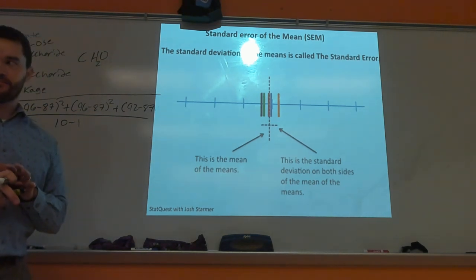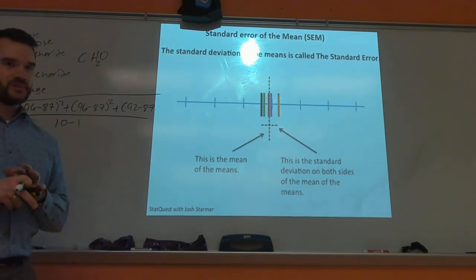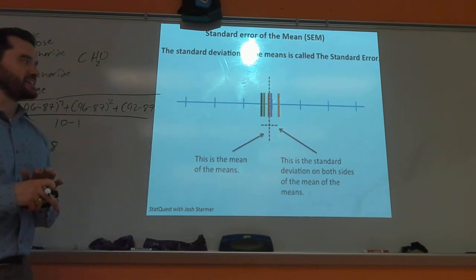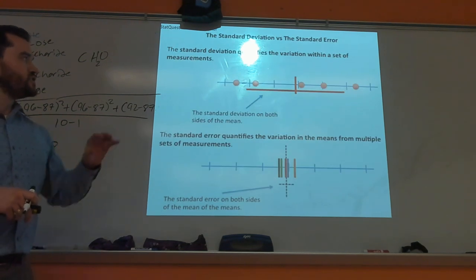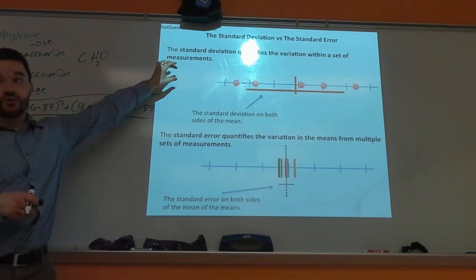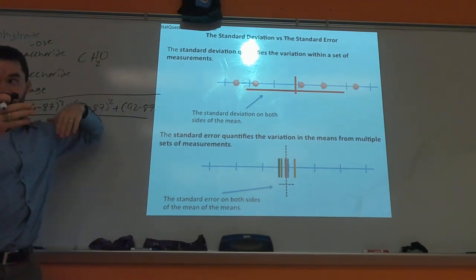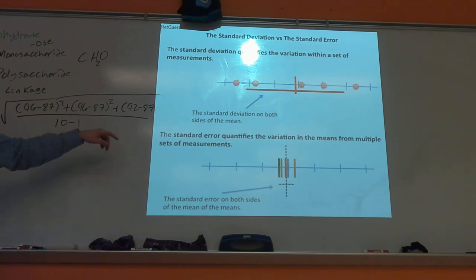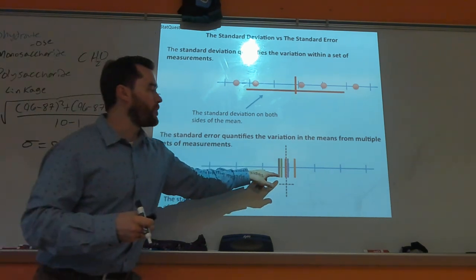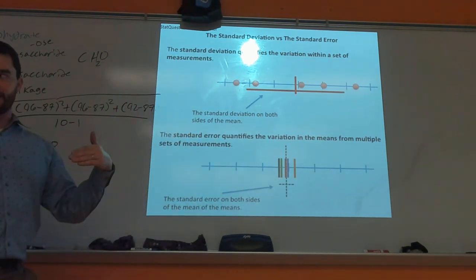'Mean of the means' is what they call it. Standard deviation: one study, one data set — you get your average and see how spread apart the data is. Standard error of the mean: multiple averages — how spread apart is that data across multiple studies? Each of these colored bars is an average from a study, and standard error of the mean shows how far apart those averages line up.